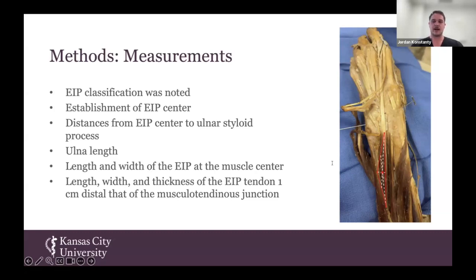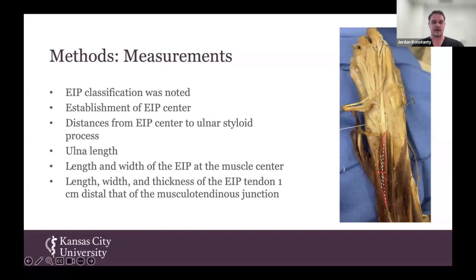We also measured the length and width of the extensor indices muscle at that center point, and then the length, width, and thickness of the extensor indices tendons themselves. We chose to only measure the muscles and tendons of the main tendon — when there were accessory tendons, we chose not to measure them due to the fact that the sample size wouldn't be large enough to get any statistically significant data.